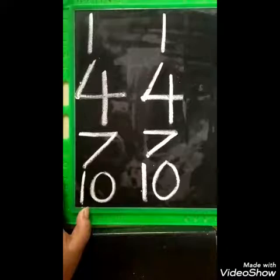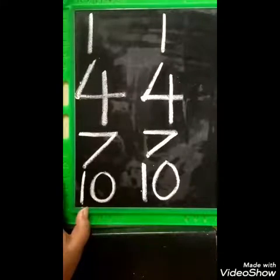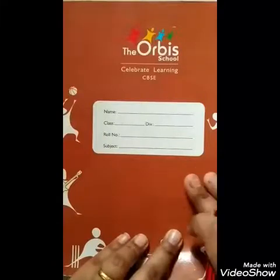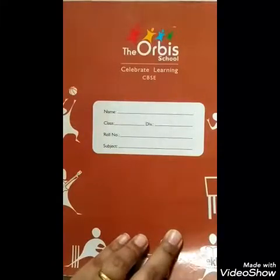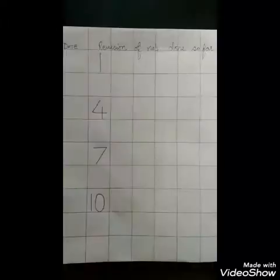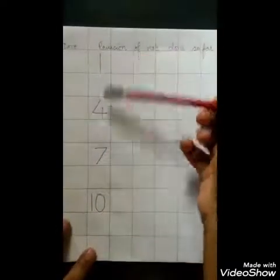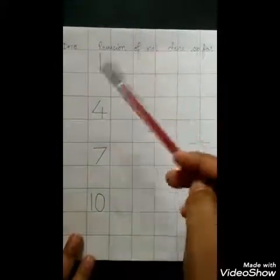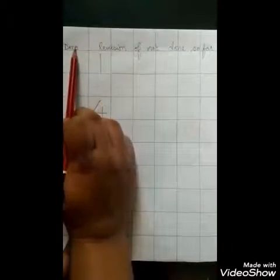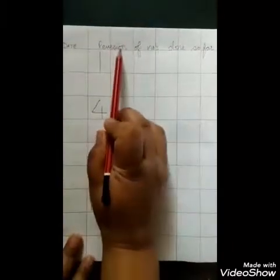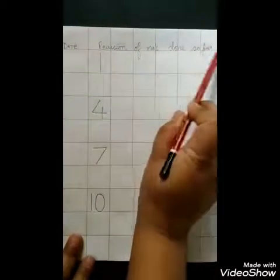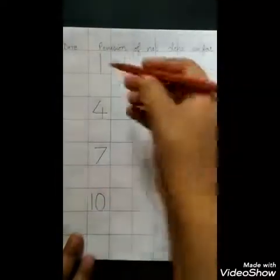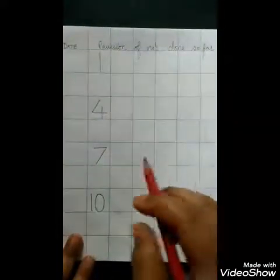Now children, you are going to write in the notebook. I will show you. This is your square notebook where you write your numbers. So dear parents, I request you to write the date here and the topic is revision of numbers done so far. Ma'am has written with the pencil — you all are going to write with the crayon.